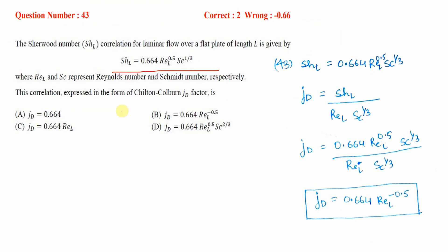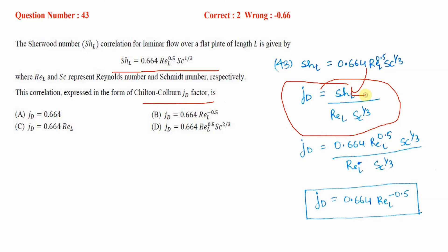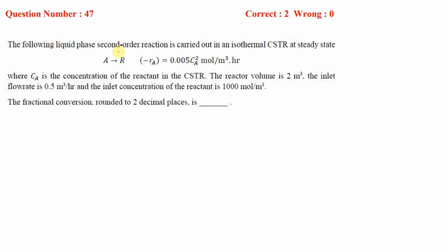Given the correlation for the Sherwood number, we need the correct expression for the Chilton-Colburn factor jD. Substituting the Sherwood number expression into the Chilton-Colburn factor formula and simplifying — common terms cancel — gives the final expression for jD.